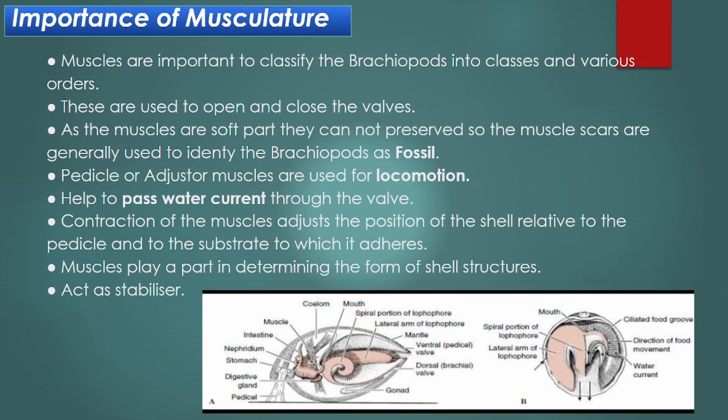Now, some importance of musculature: muscles are important to classify brachiopods into classes and various orders. These are used to open and close the valves. As muscles are soft and cannot be preserved, muscle scars are generally used to identify brachiopods as fossils. Moreover, pedicle or adjuster muscles are used for locomotion. It helps to pass water current through the valve. Contraction of the muscles adjusts the position of the shell relative to the pedicle and to the substrate to which it adheres. Furthermore, muscles play a part in determining the form of shell structures. Musculature also acts as a stabilizer.